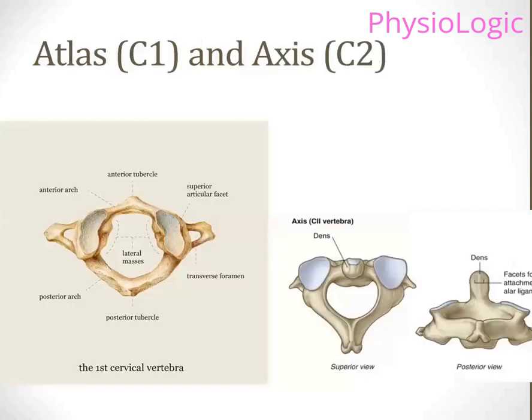Beneath the skull, the point where the skull ends is your C1 vertebra. The image on the left and on the right shows your axis. When the skull terminates, beneath it are the vertebrae making up our vertebral column. The first vertebra, C1, is known as the Atlas, and the second vertebra is your Axis.